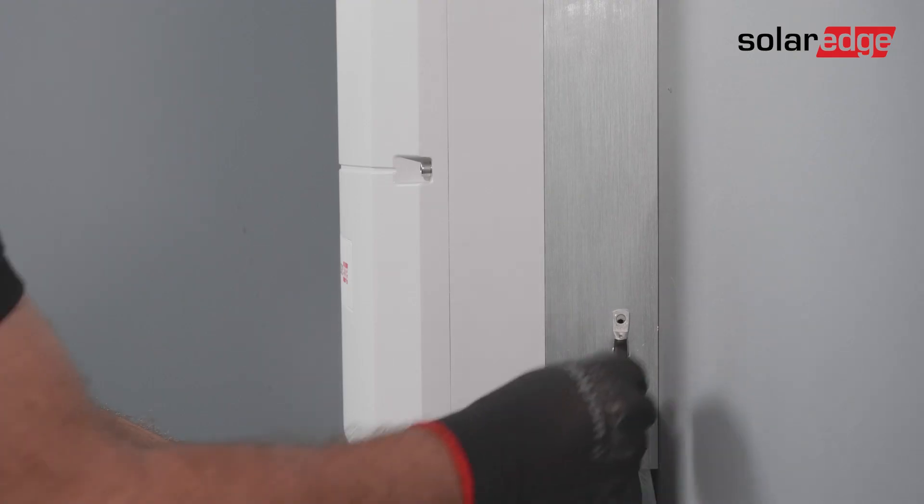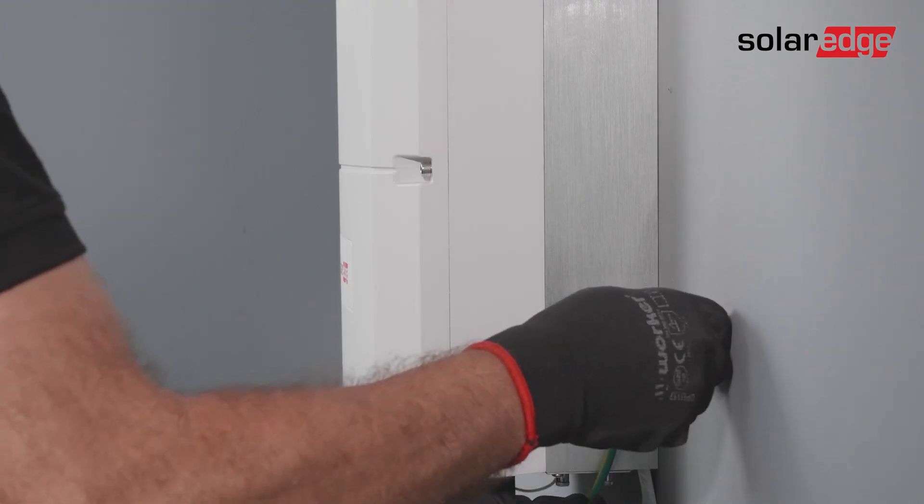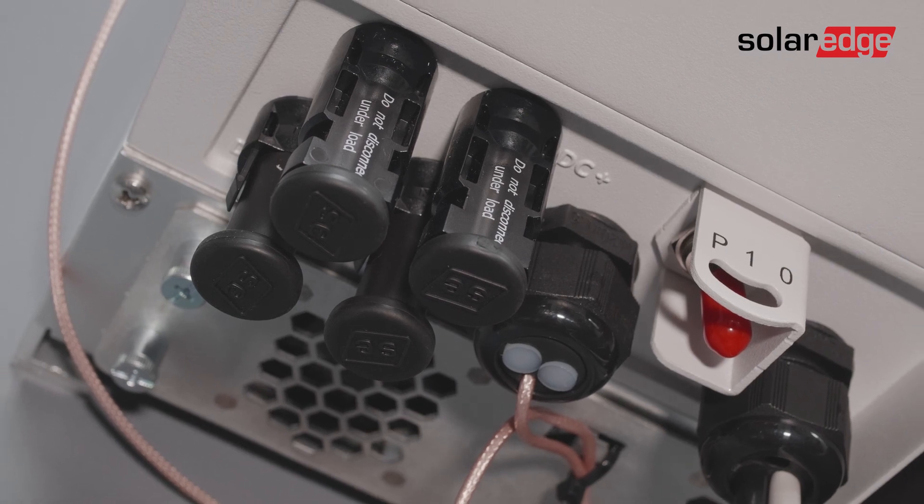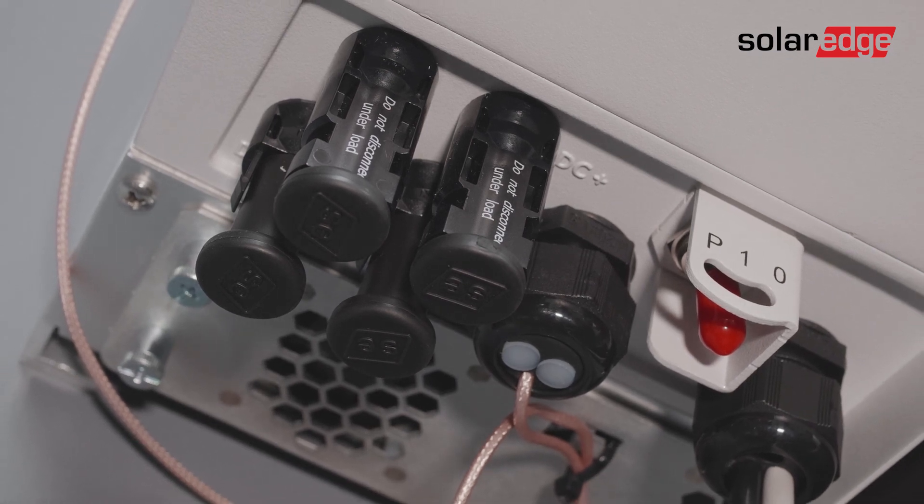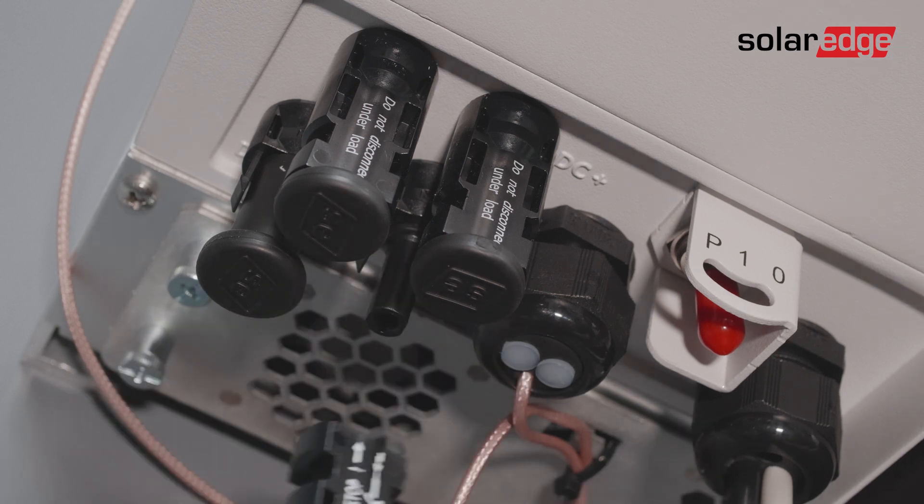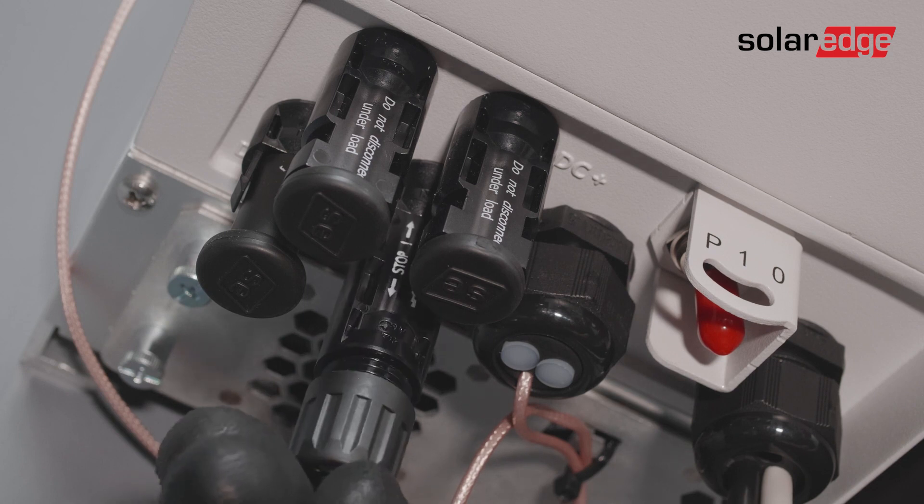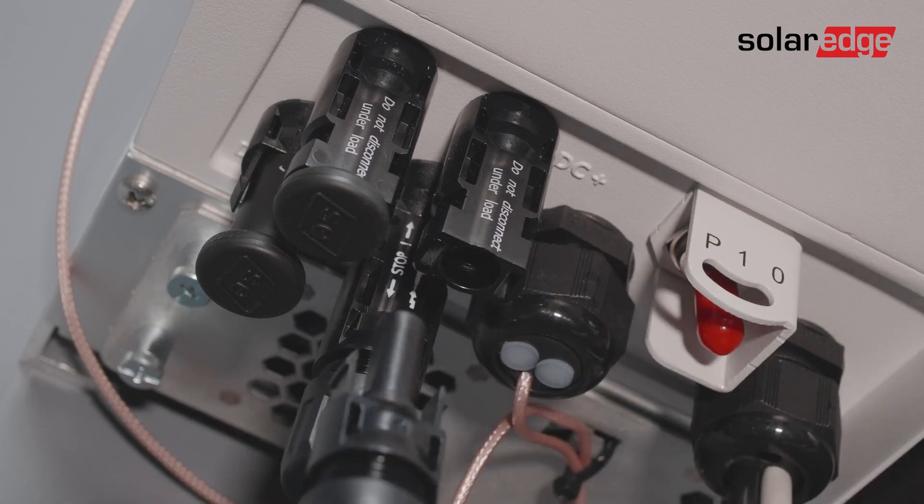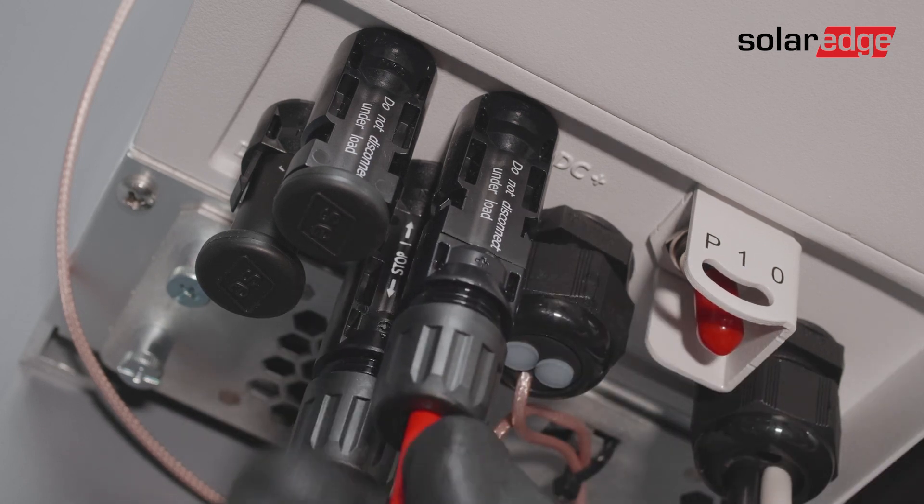Connect the grounding cable between the inverter and the battery. Now, connect the string to the DC input pairs. Please note the polarity. Connect the DC connectors of each string to the DC minus and DC plus connectors until you hear a clicking sound.